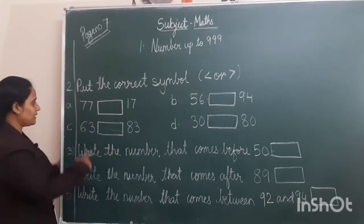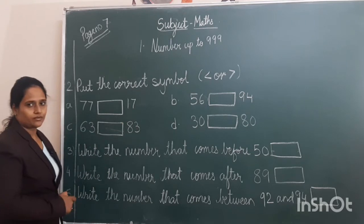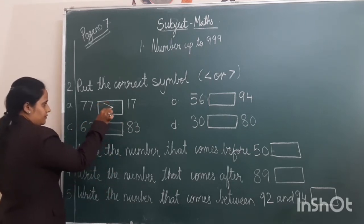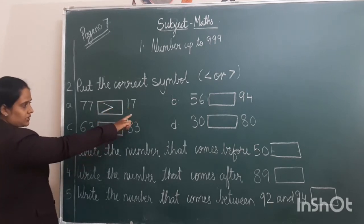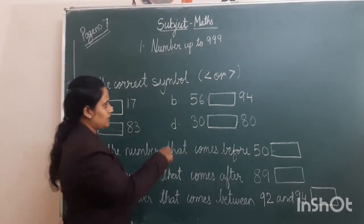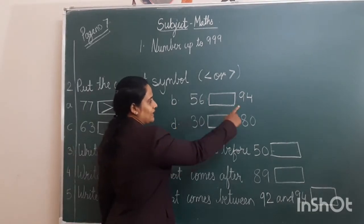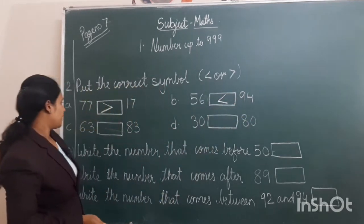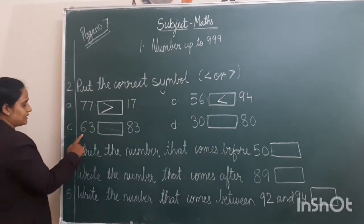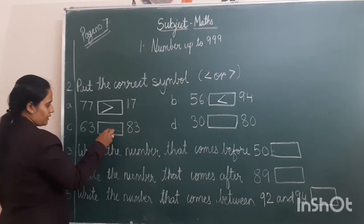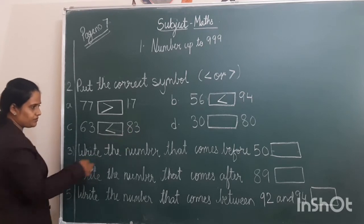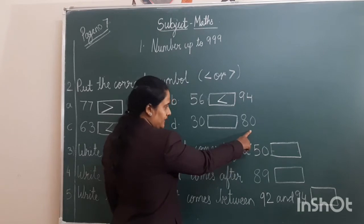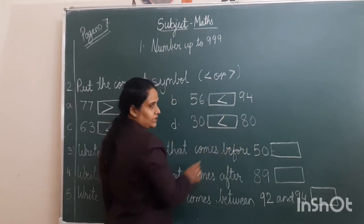Our first example is 77 and 17. Which is the greater number? 77. So the closed side will come to the smaller number. Second: 56 and 94 — here 94 is the greatest number. Third example: 63 and 83 — 83 is the greater number. Then 30 and 80 — 80 is greater.